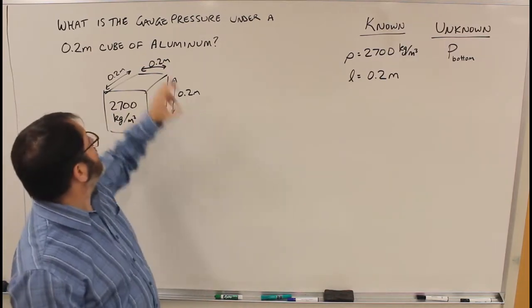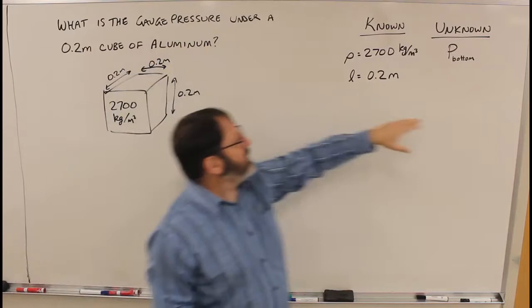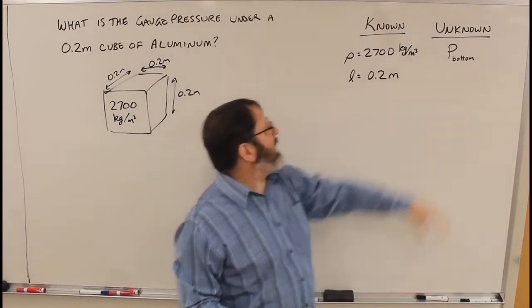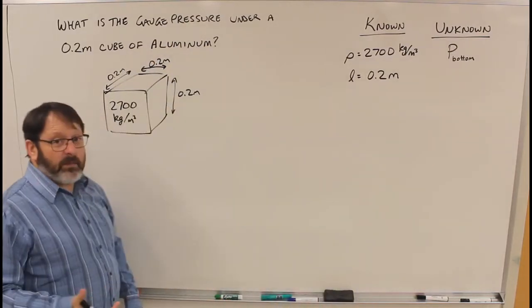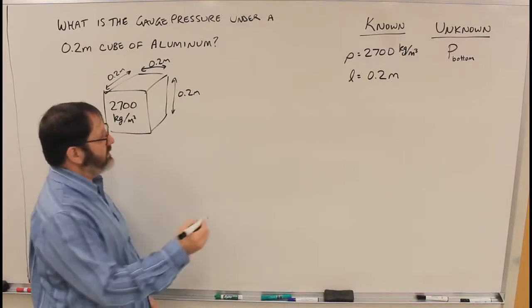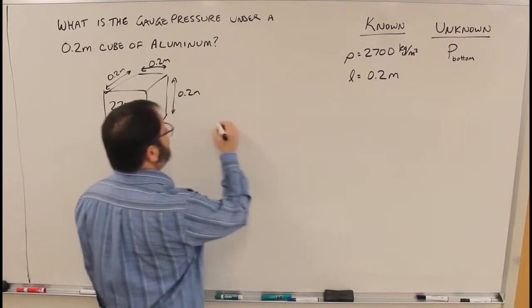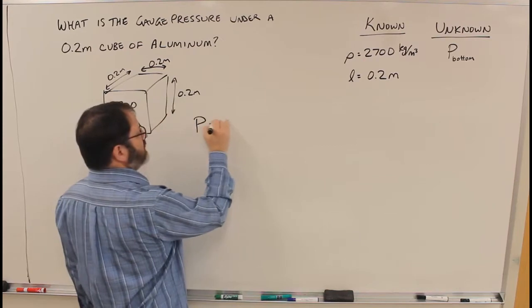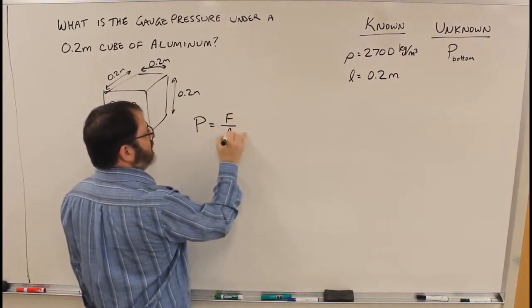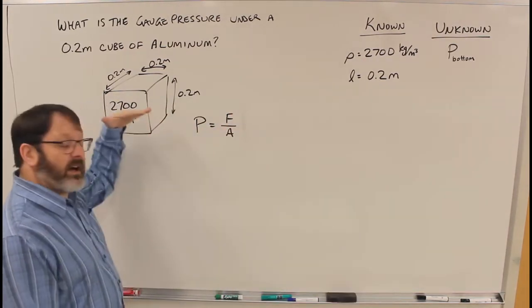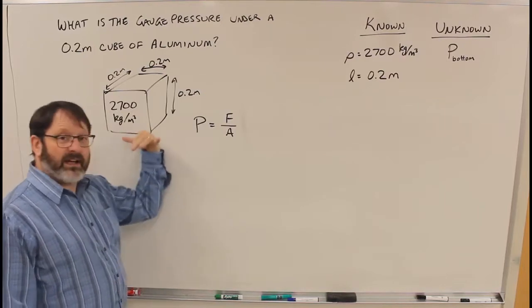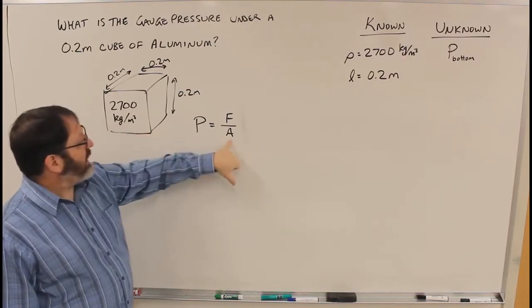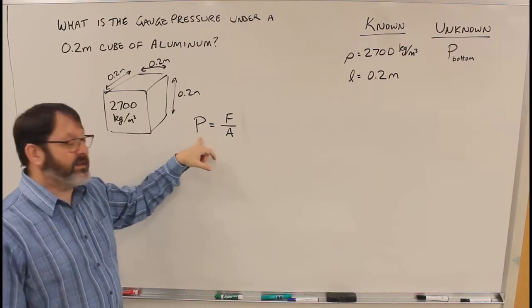Alright, so now the question is asking the gauge pressure underneath, so what's the pressure at the bottom of this thing. There are a couple of different ways to do it. One way we can approach it is to say, well, I know that the pressure is defined as force per area, so if I can figure out how much force is applied at the bottom of this and the area at the bottom, then I can find the pressure.